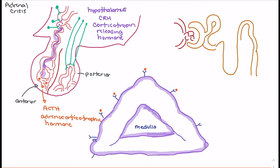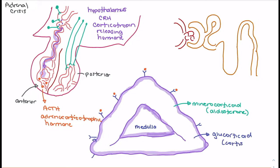When we have binding of ACTH to the adrenal cortex, this is going to support the release of aldosterone, which is a mineralocorticoid. We also see the release of a glucocorticoid — the primary glucocorticoid we're going to talk about is cortisol. We should discuss some of the primary functions of our mineralocorticoids and glucocorticoids.